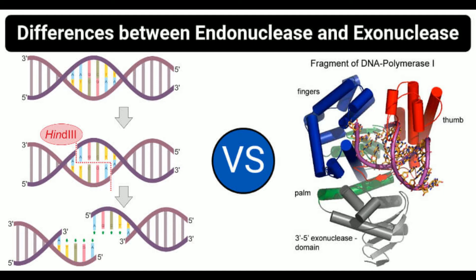Restriction endonucleases are one of the most important groups of endonucleases, divided into three types based on their mechanism of action. Type I endonucleases are large multi-subunit complexes that cleave at random sites about 1,000 base pairs away. Type II endonucleases are smaller subunits that cleave sequences in the absence of ATP. Type III endonucleases are also complexes that cleave sequences at about 25 base pairs. Endonucleases can cleave double-stranded DNA, single-stranded DNA, or even RNA. These enzymes are vital for DNA repair, allowing recognition and precise cleavage of damaged DNA, preventing unnecessary cleavage and further damage.